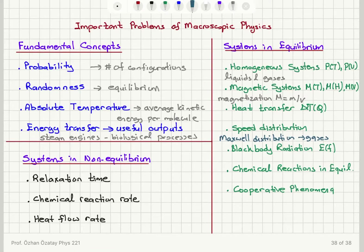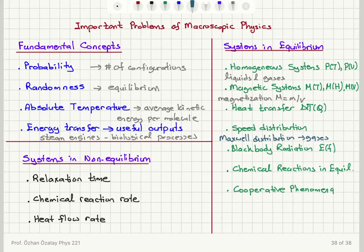Another macroscopic parameter we look at is the energy inside a cavity due to photons in equilibrium with the walls of the container. How does the energy depend on the frequency of the photons? That is, photons in equilibrium inside a cavity.